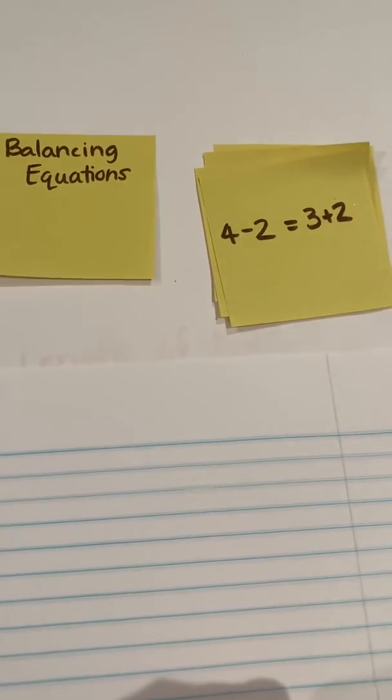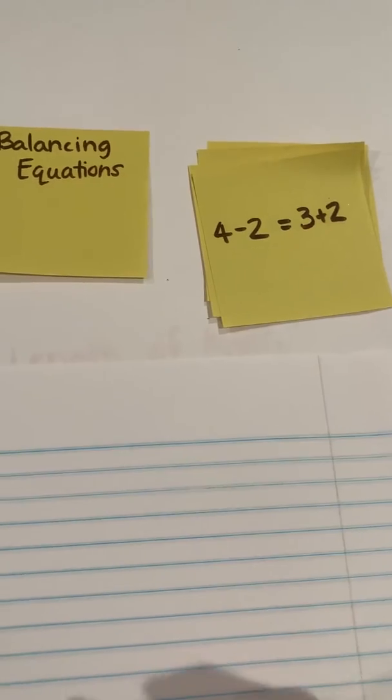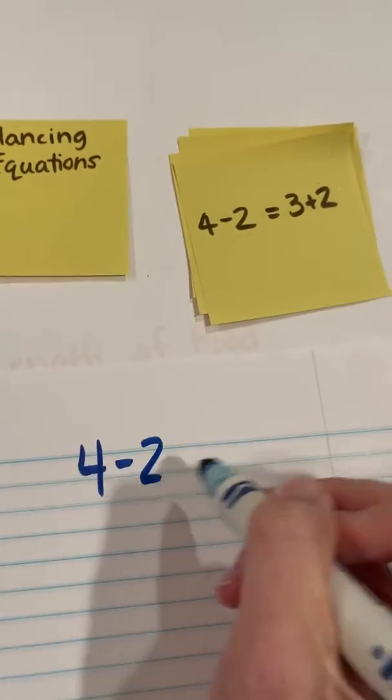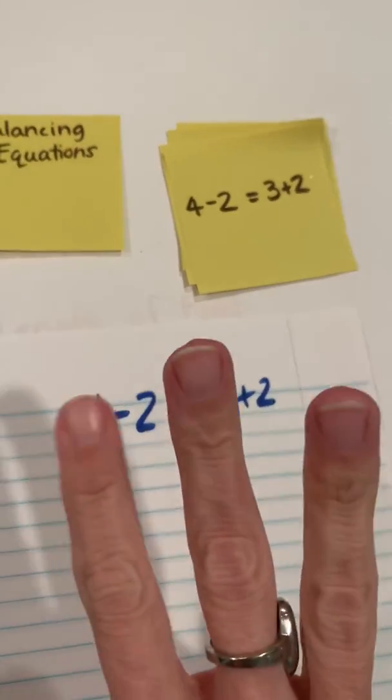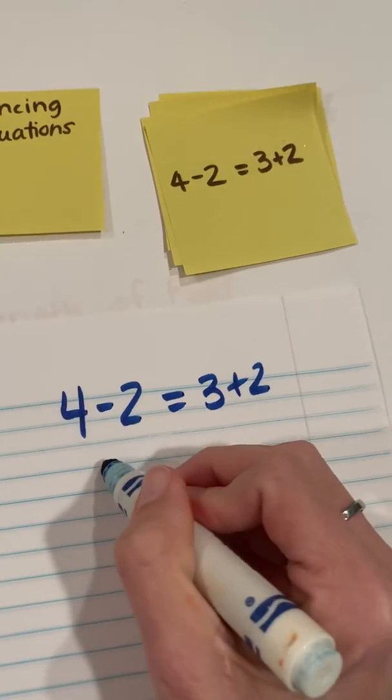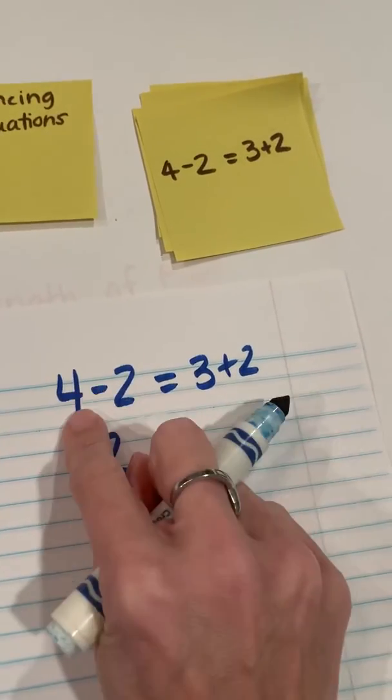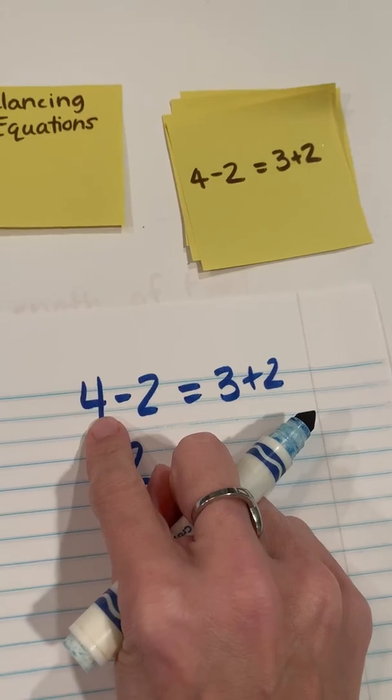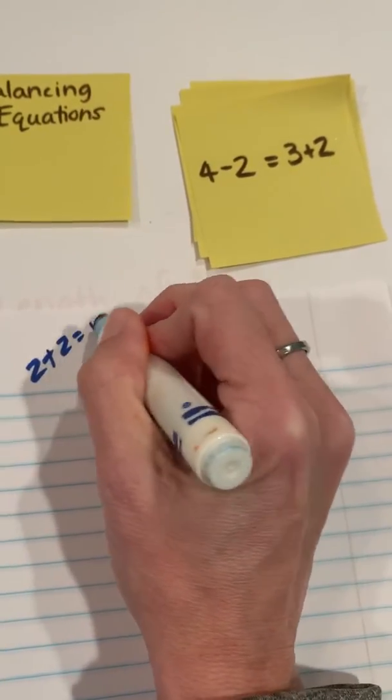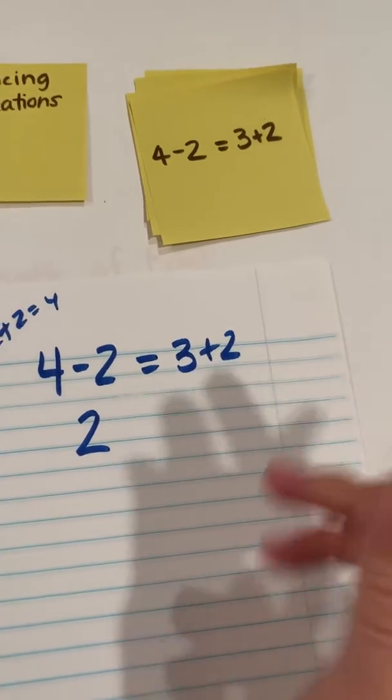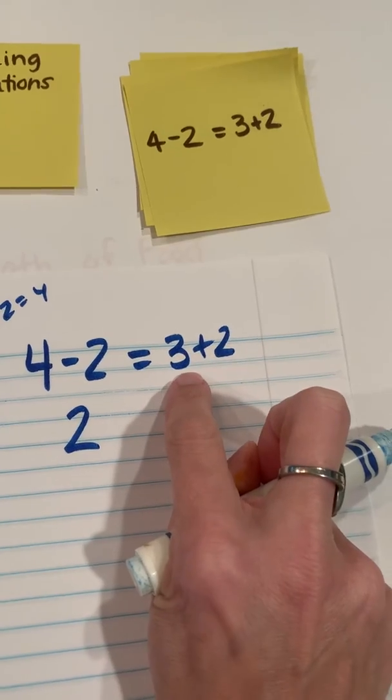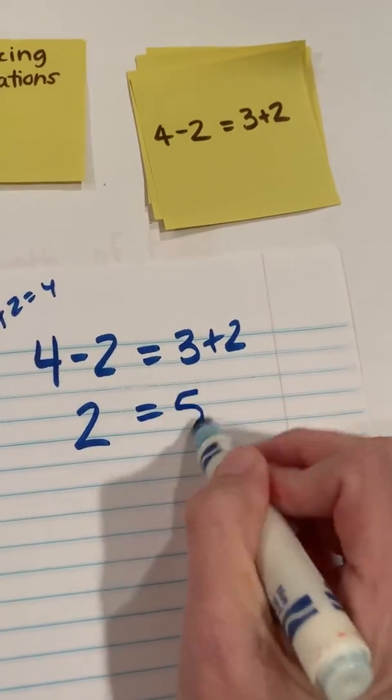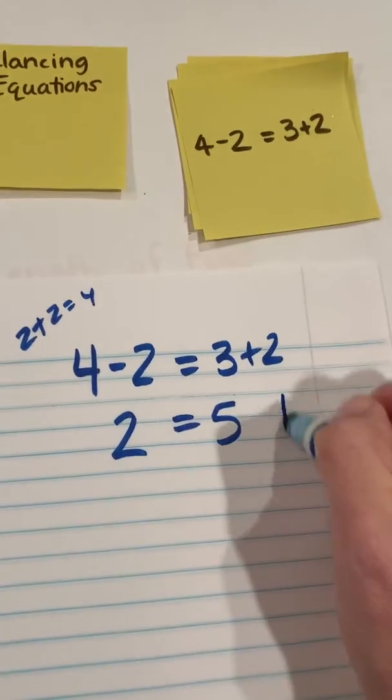Alright, so let's step it up a bit. I've got 4 minus 2 is the same as or equal to 3 plus 2. If I've got 4 and I take away 2, I know that the difference is 2. Or I can think of this as reverse, think of it as an addition fact. I know that my doubles, 2 plus 2 equals 4. And then I have 3 plus 2. I can think of this as a near double. I know that 2 plus 2 is 4 plus 1 more would be 5. So is 2 equal to 5? That would be false.